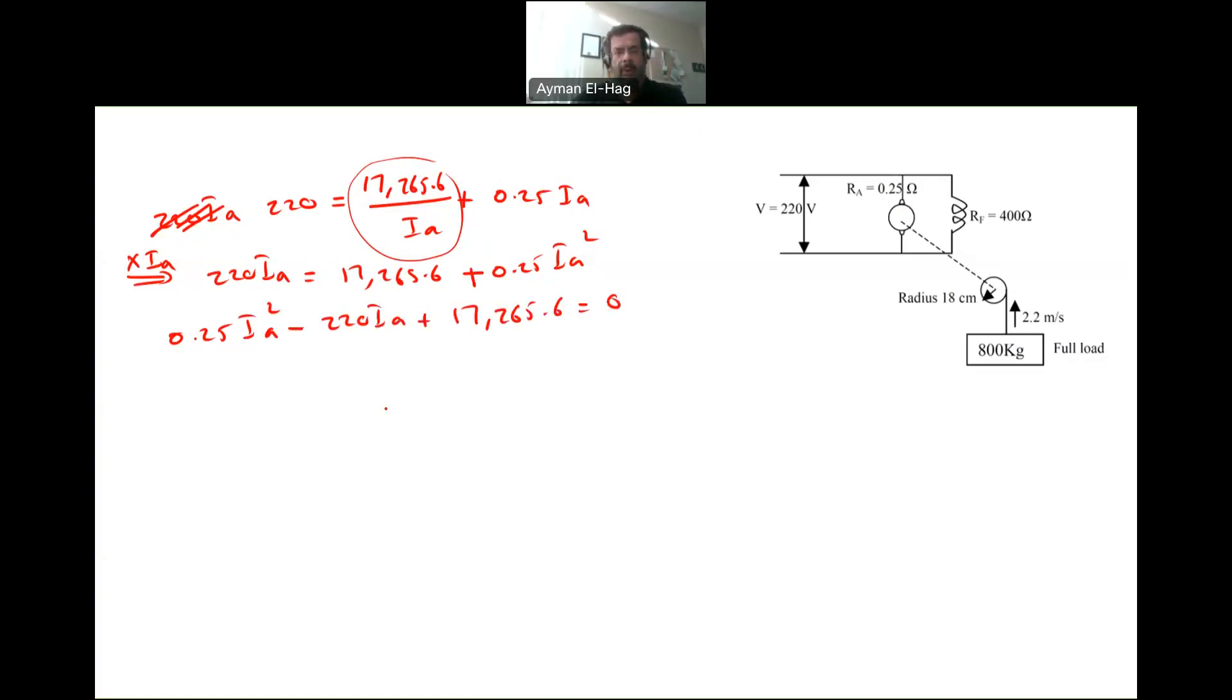Now we need to solve this. You can easily solve this. Your IA solution for a quadratic equation minus B plus minus B squared minus 4AC divided by 2A. So your B is equal to minus 220, your A is equal to 0.25, and your C is equal to 17,265.6. When I substitute and try to solve for this, you will find two solutions: 792.9 amps or 87.1 amps. This is from the math perspective.